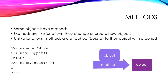Another powerful part of Python is that objects can have methods. Methods look like functions, but they are attached or bound to their object with a period. Here's a simple example: I have created a string with my name in it, and we're going to call the upper method on the string — that returns a new string with my name capitalized. Another example: calling the index method, looking for the letter I. It's going to return one — remember, we count from zero, so it finds the I in position one.